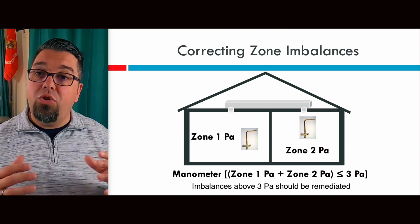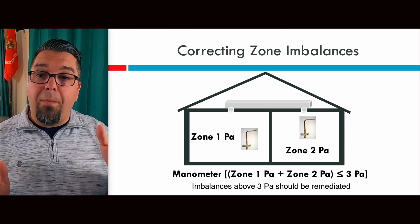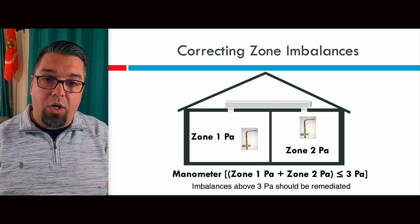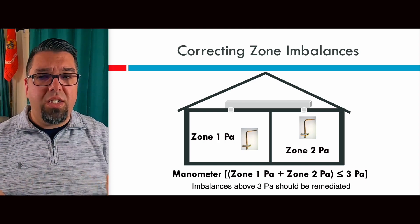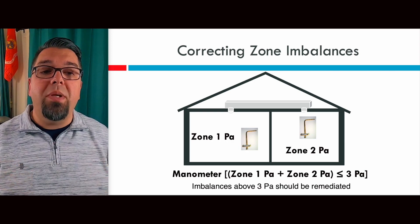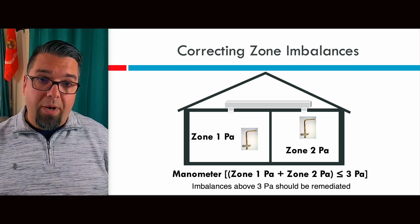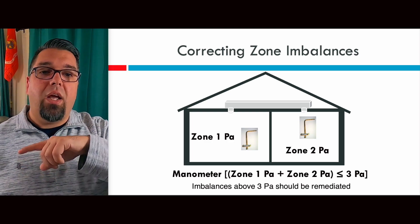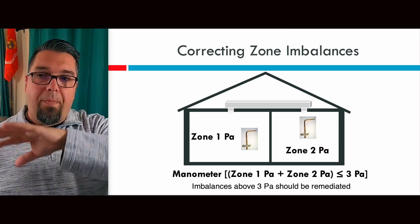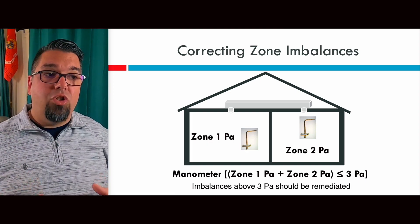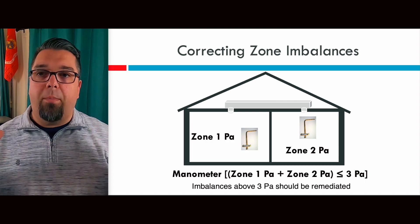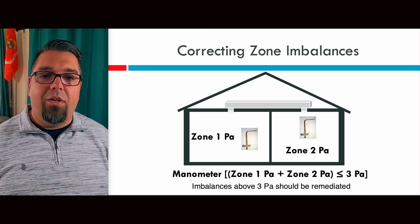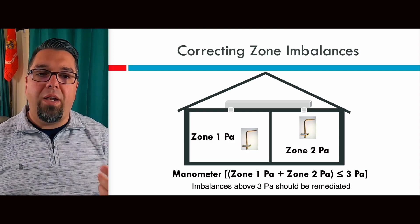When correcting zone imbalances, if you do this test and have more than a 3 Pascal difference — that's the pressure in metric — you need to remediate that space. Good dual-input manometers will measure Pascals as well as inches of water column. If you measure across zones and have more than a 3 Pascal difference, you need to remediate. That might be adding a return to a bedroom or putting in a jump duct across those bedrooms — but keep in mind, now you're going to be circulating air through an unconditioned space to balance it out. You don't want to depressurize a hallway and pull combustion product air back from the basement because now you've sealed everything up. 3 Pascals is the max — anything more than that, make sure you're remediating.